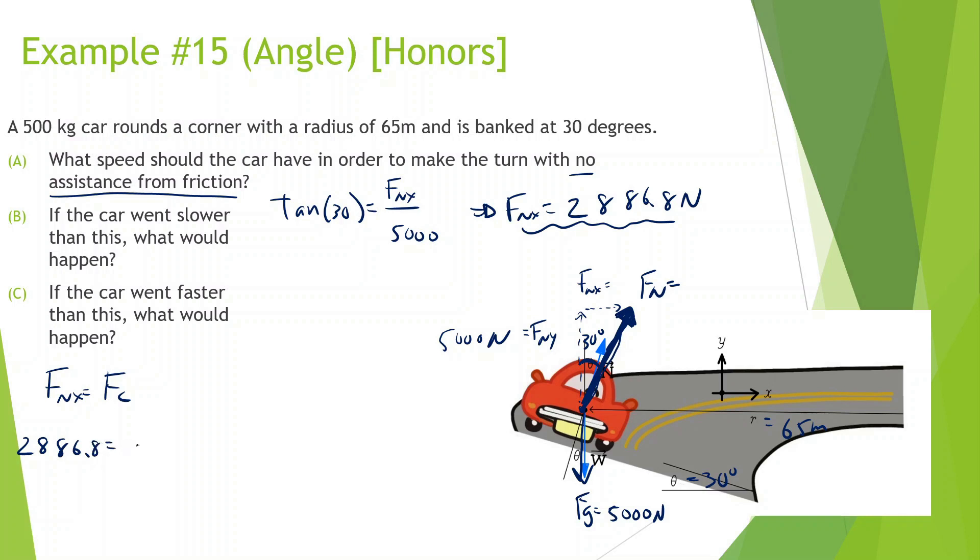So I can say force normal in the X is equal to 5000 times tan of 30, and we get 2886.8 newtons. What we should also know is the normal force in the X direction is equal to the centripetal force because that's what's allowing it to move in a circle, especially since there's no friction. We know this normal force in the X is what's making it move in a circle. So let's just figure this out. 2886.8 is equal to mv squared over r. M is 500, v is what we're looking for, the speed, and the r is 65. Times 65 divided by 500, square root of that, we get 19.37 meters per second. So we should know this is the speed where you don't need any assistance from friction and you're able to go around this bend without friction at all.